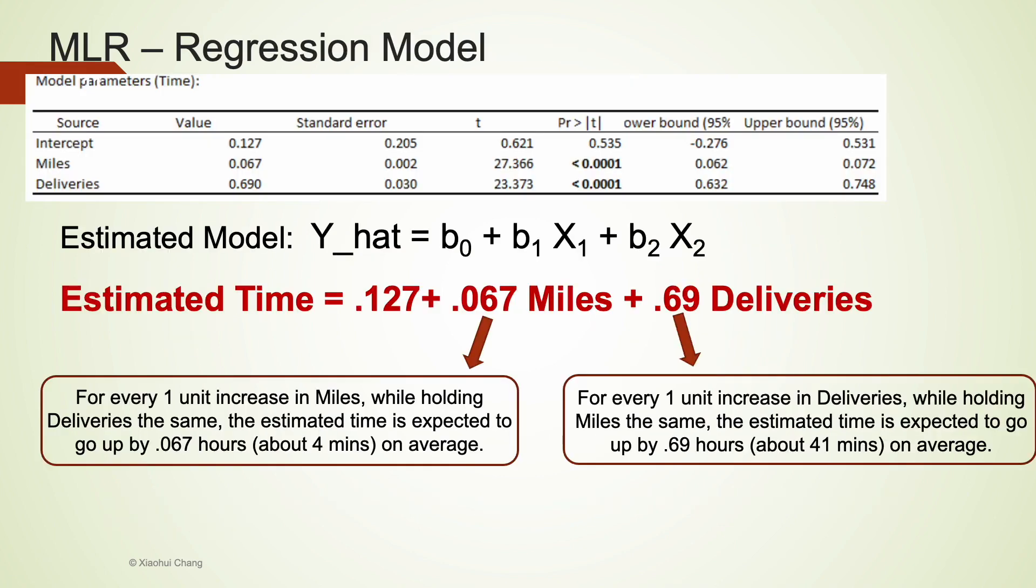Let's see how we can interpret the slope coefficients in the estimated regression model. They actually measure the marginal effects of the x. For example, 0.067 means for every 1 unit increase in miles, while holding the deliveries the same, the estimated time is expected to go up by 0.067 hours, about 4 minutes on average. And for every 1 unit increase in deliveries, when we hold miles the same, the estimated time is expected to go up by 0.69 hours, about 41 minutes on average.